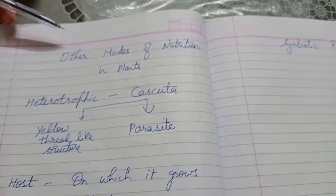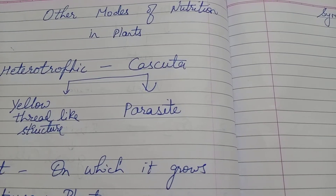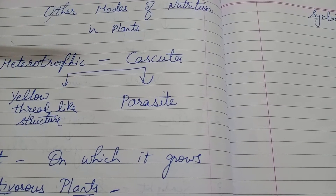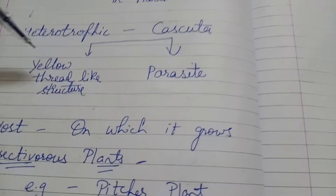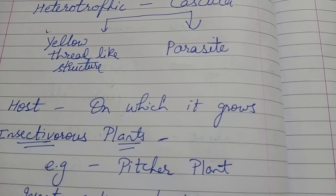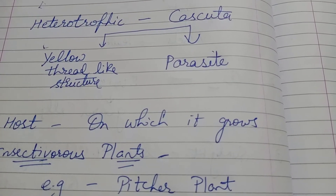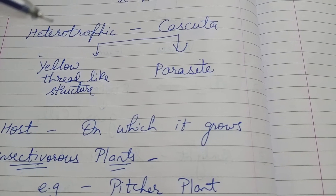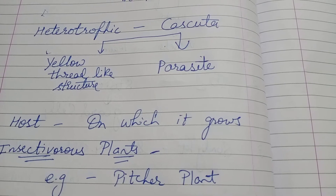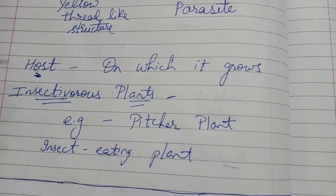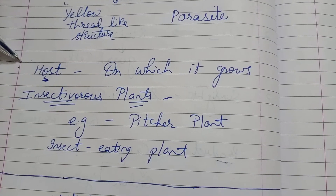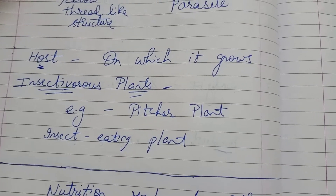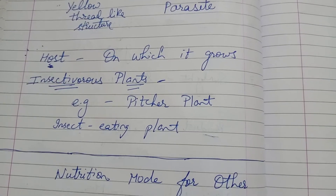Then come other modes of nutrition in plants. Heterotrophic — plants which cannot prepare their own food. A very common example is Cuscuta. Cuscuta is a yellowish thread-like structure; it is without leaves and it grows on other plants. Cuscuta is a type of parasite — it takes nutrition from other living organisms and also causes harm to them. The plant on which it grows is called the host. So Cuscuta grows on another plant, takes nutrition from it, and also harms that host.